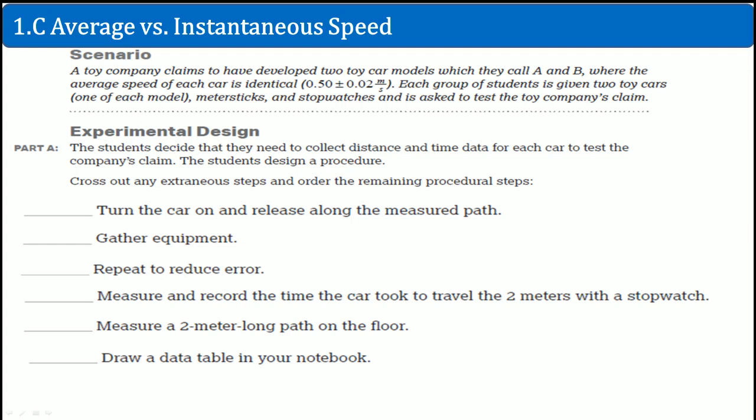Welcome, this is APF's Physics Workbook Solution. Here I'm covering 1.C, which is on average versus instantaneous speed. A toy company claims to have developed two toy car models, which they call A and B, where the average speed of each car is identical. Each group of students is given two toy cars, one of each model, a meter stick and a stopwatch, and asked to test the toy company's claim.